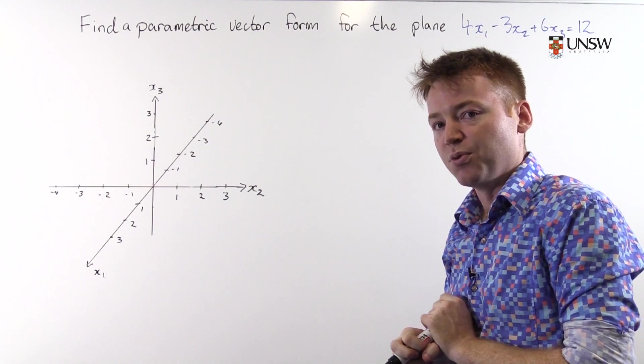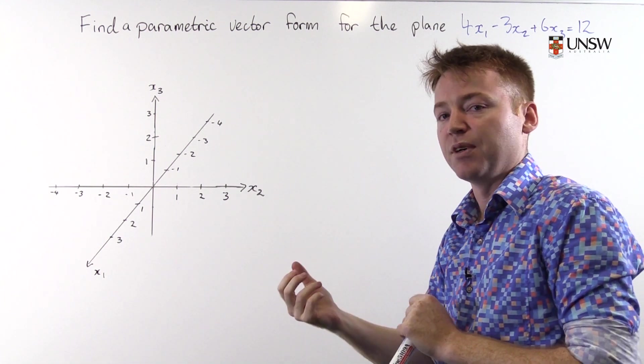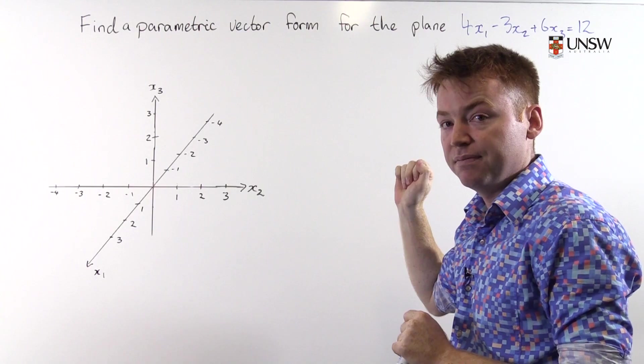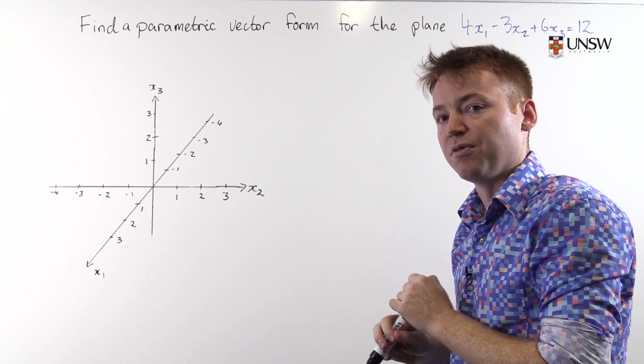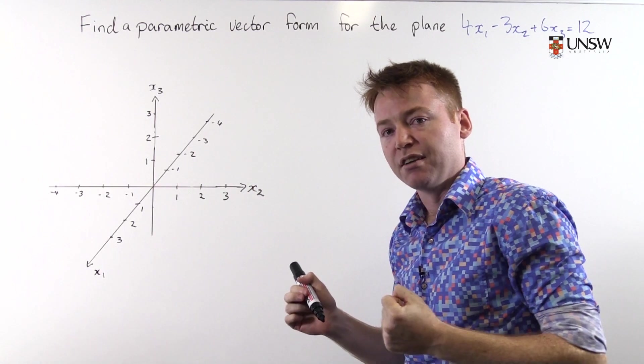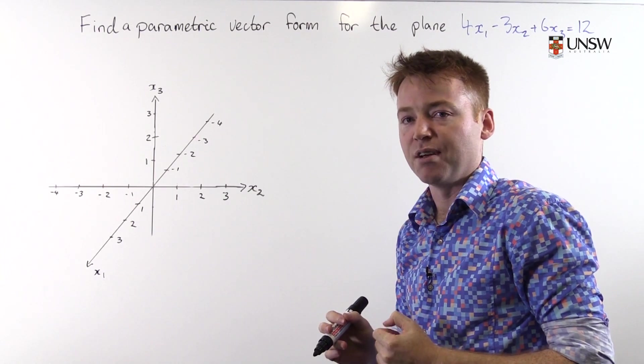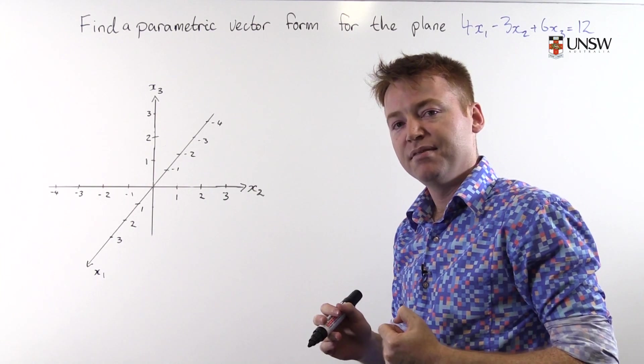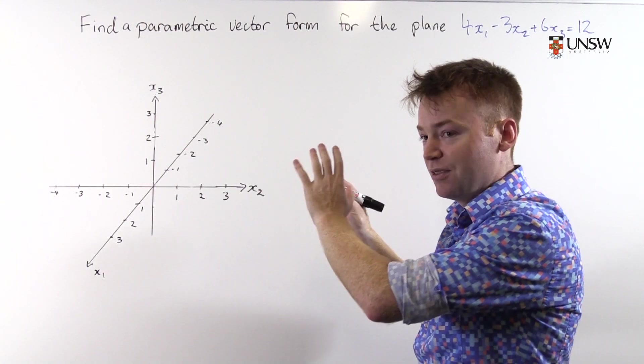We're also going to do this question in two ways. There's a first way which is very visual where you find some points on the plane and then from those three points you find a parametric vector form of the plane. That's nice because you get a picture and a feeling for what this plane actually looks like. There's a second way which is somewhat mechanical and straightforward and gets you the answer but it's less visual. We will do both ways. First the visual way.